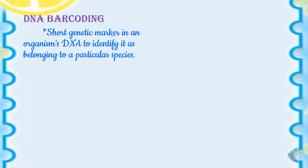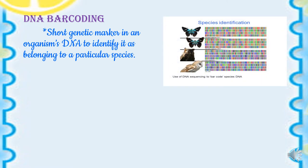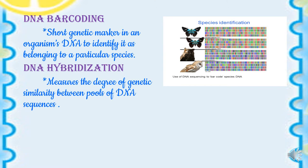DNA barcoding — you might know the term barcoding; they are coded forms which are read with the help of machines. In DNA barcoding, short genetic markers in an organism's DNA are used to identify it as belonging to a particular species. These short genetic markers help us identify the particular species.